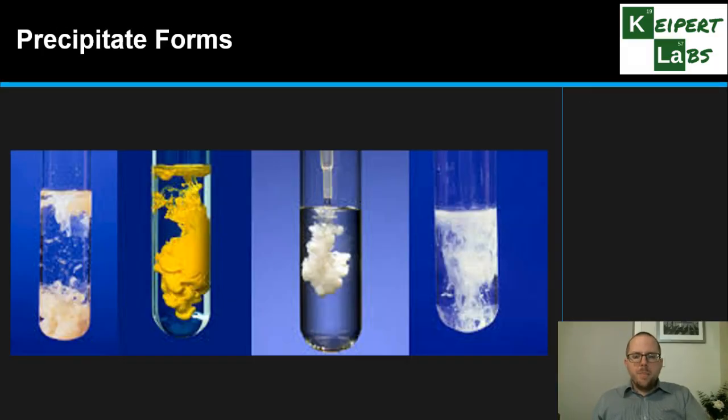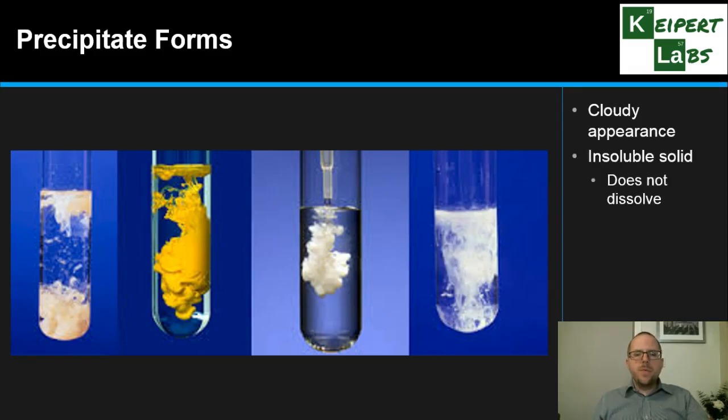The next one that can happen is the forming of a precipitate. Precipitate is the scientific word for what happens when we mix things together and we get a cloudy appearance. They're not transparent and easy to see anymore - they may be translucent or almost opaque depending on exactly how cloudy it is. The reason that it goes cloudy is that we have formed an insoluble solid when these things are reacting.